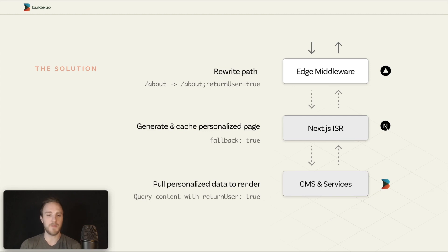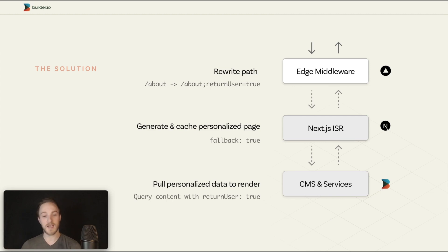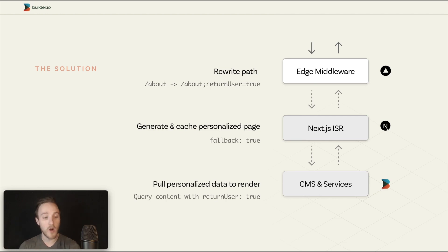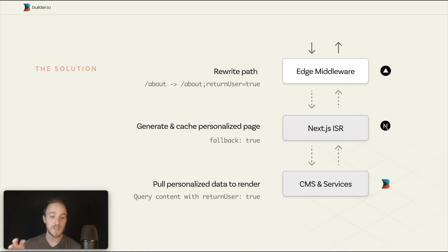We're going to rewrite that slash about page to add a delimiter like a semicolon and then add key-value pairs — so the path is not just about. I want to show the about page for return user equals true, maybe shops collections equals men, other things like prior shopping history, UTM params. All of that can become part of the new path that becomes the cache key.